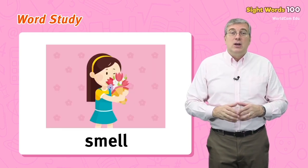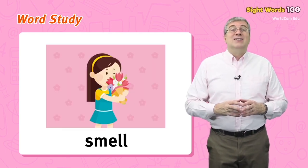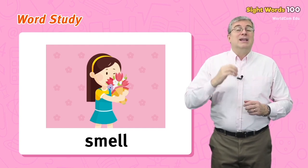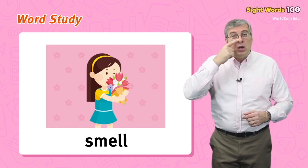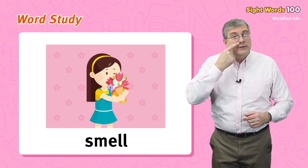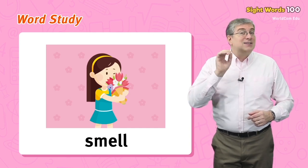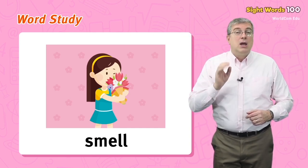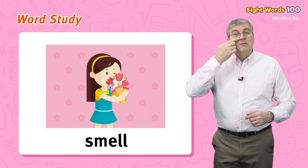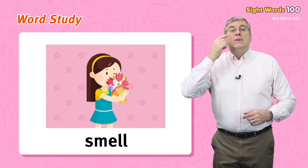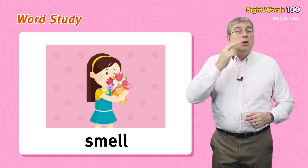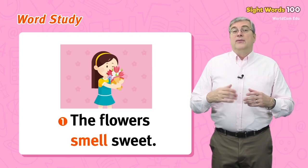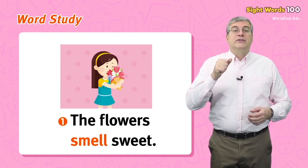Next we have smell. A smell is something that your nose notices, just like a sound is something your ears notice. When you smell something, you notice it with your nose. For example, the flowers smell sweet.